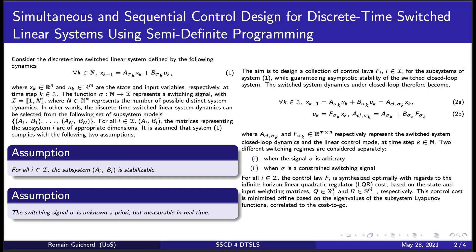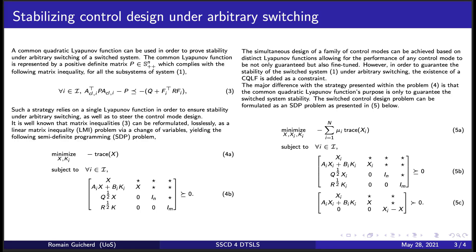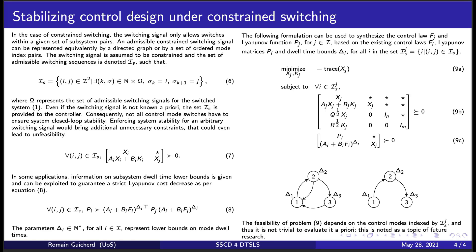Whilst guaranteeing the asymptotic stability of the switched closed-loop system, we consider two distinct switching regimes. First, when the switching signal Sigma is arbitrary, and second, when Sigma is a constrained switching signal. In the arbitrary switching case, it is common to use a common quadratic Lyapunov function to prove stability. This Lyapunov function is represented by a positive definite matrix P that complies with the matrix inequality provided in equation 3.